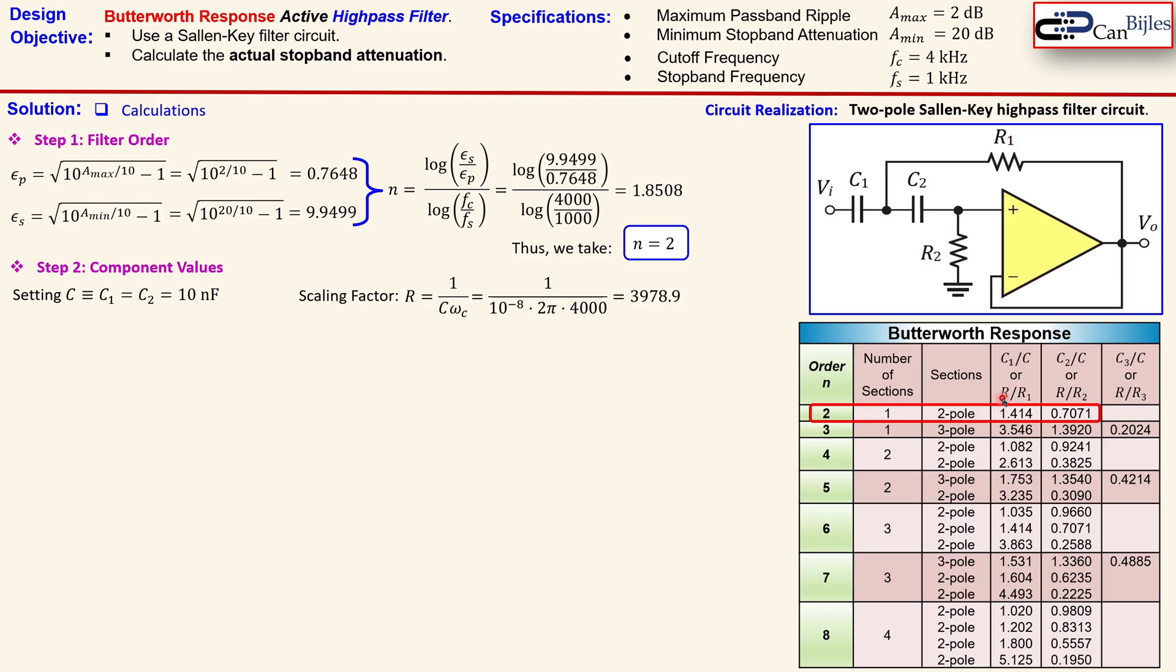You see here the R, which is our scaling factor, over R1, which is the component we need to calculate in our circuit. That ratio must be 1.414. Now that is also in a similar case true for R/R2, which is this resistor value, and that should be then 0.7071.